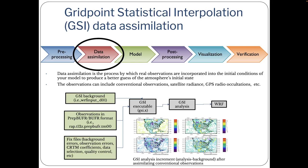The second component is the Grid Point Statistical Interpolation, or GSI, used for the data assimilation step. This is an optional step, but it can help improve your forecast. Data assimilation is the process by which real observations are incorporated into the initial conditions of your model to produce a better guess of the atmosphere's initial state. There are a number of observations that can be included in this step.